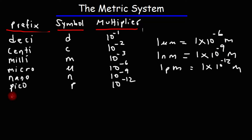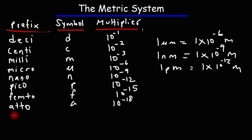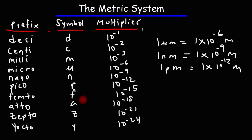There are some other ones below pico. Next, we have femto, lowercase f — that's 10 to the negative 15. After femto is atto, lowercase a, which is 10 to the negative 18. After atto, it's zepto, lowercase z, 10 to the negative 21. And after zepto, it is yocto, lowercase y, 10 to the negative 24. For the smaller units, typically you need to know up to pico. So you need to know from pico, 10 to the negative 12, to tera, 10 to the positive 12 — those are the common prefixes. The others are optional and not commonly used.